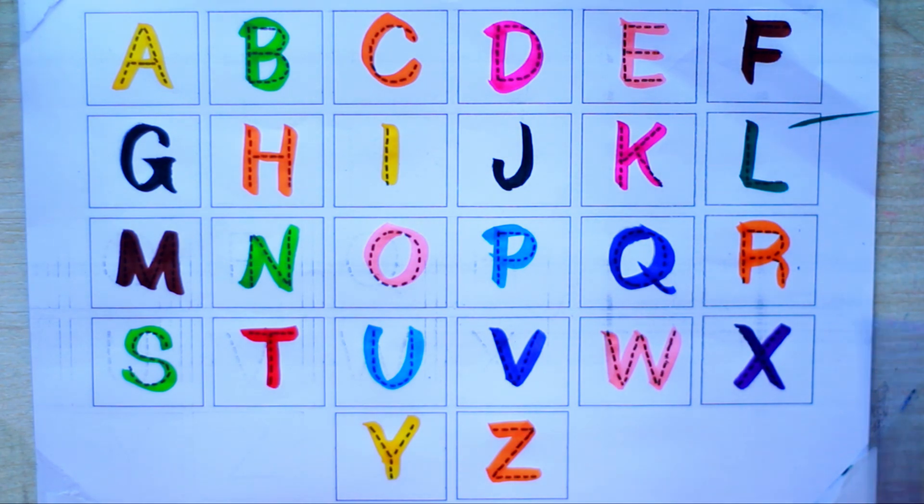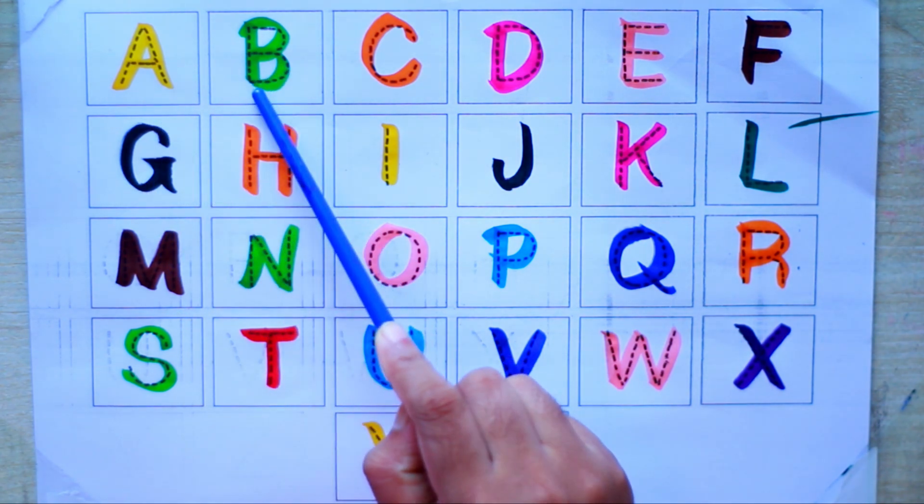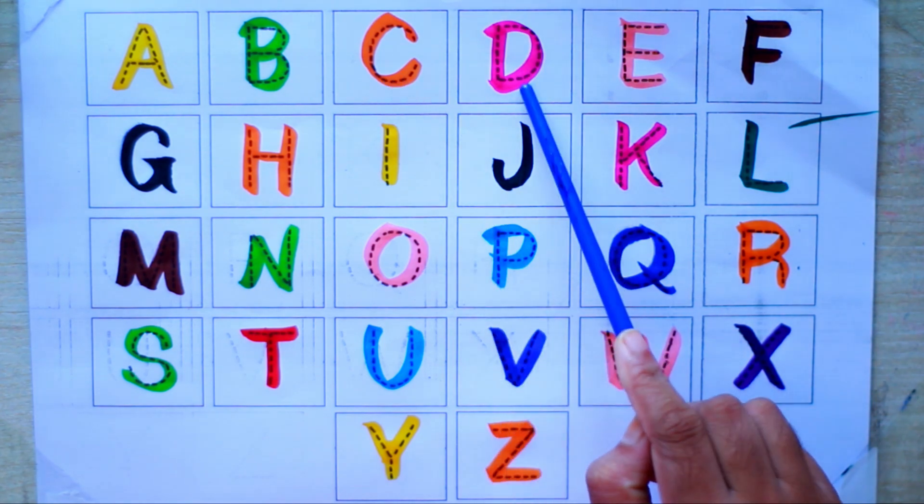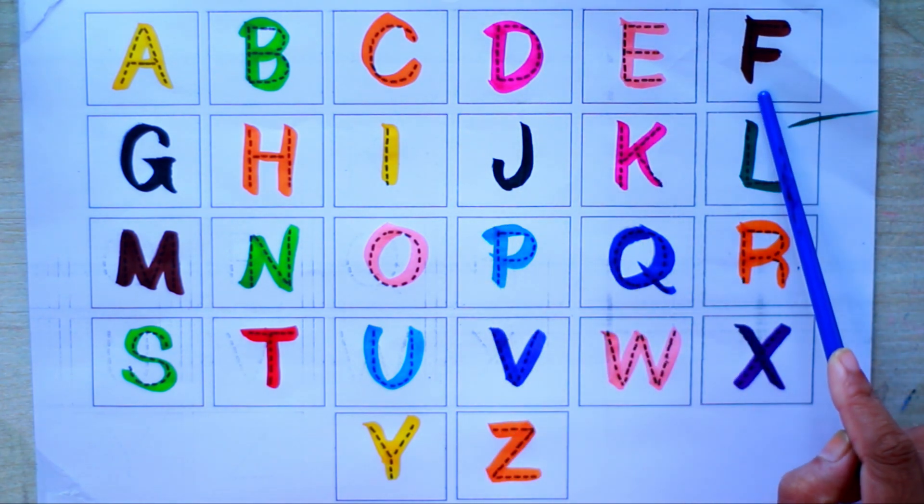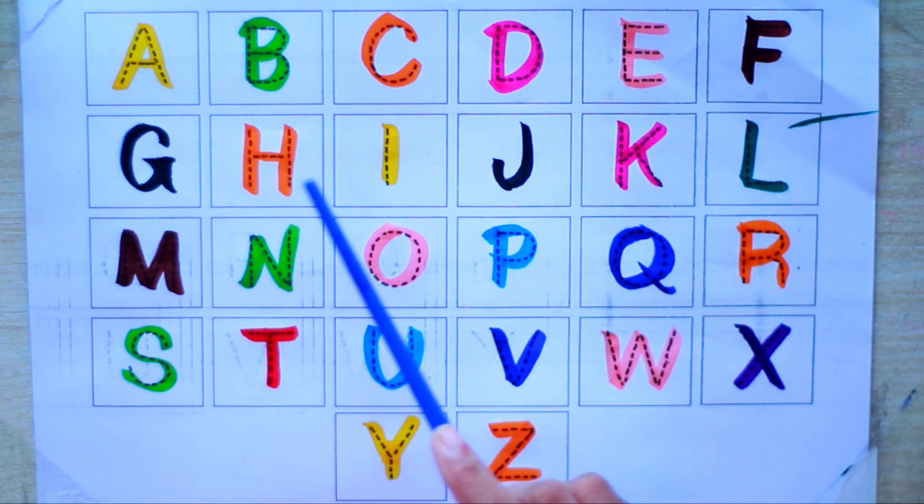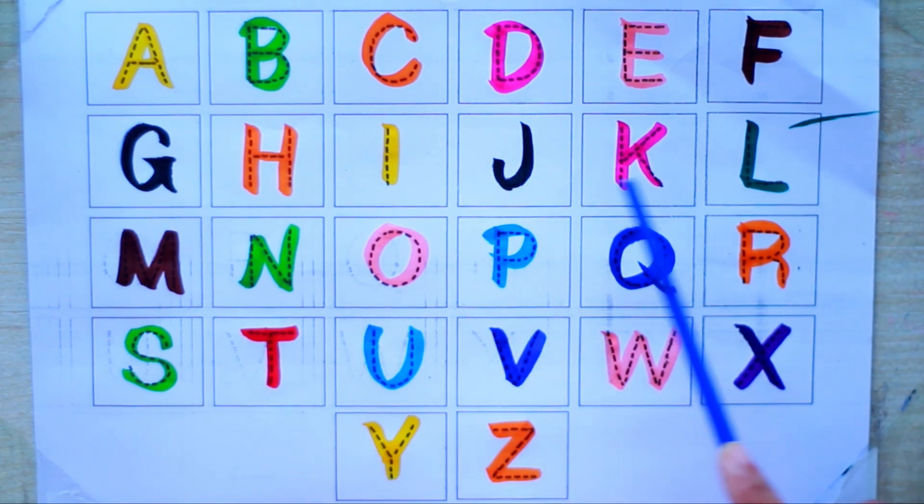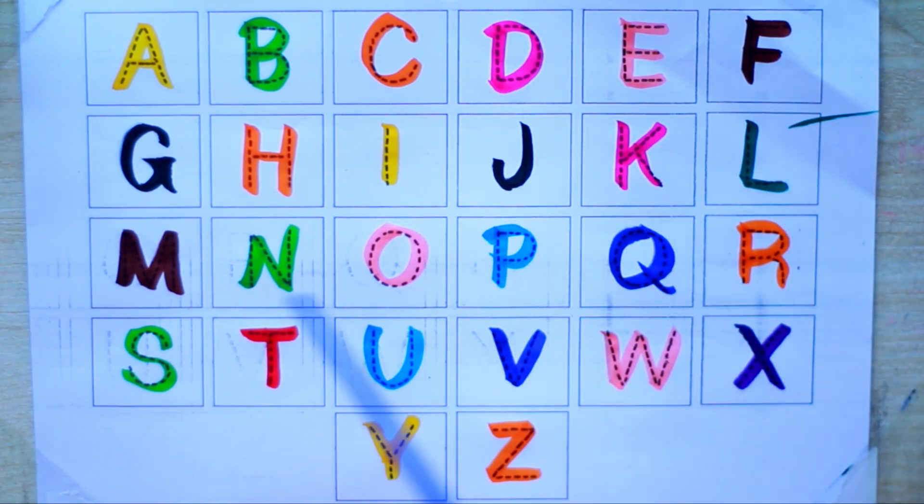Next time won't you sing with me. A, B, C, D, E, F, G, H, I, J, K, L, M, N, O, P, Q, R, S, T, U, V, W, X, Y, and Z. Now I know my ABCs.